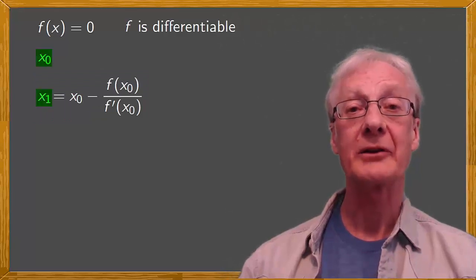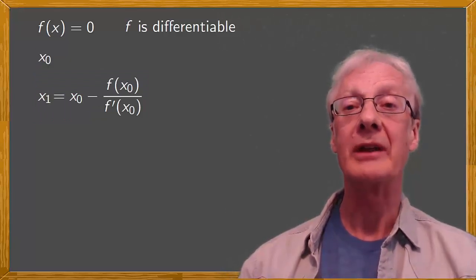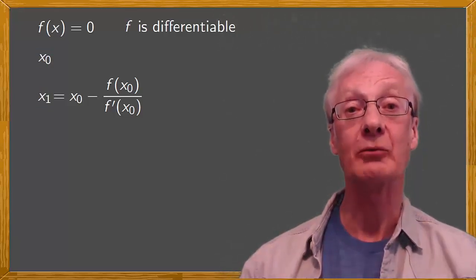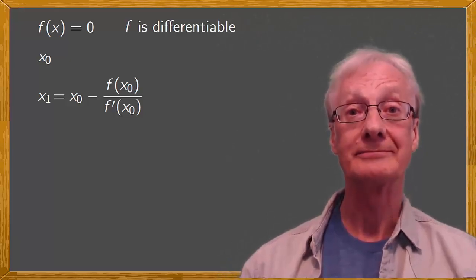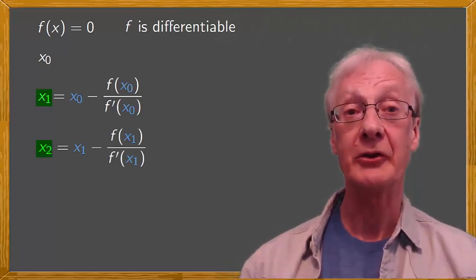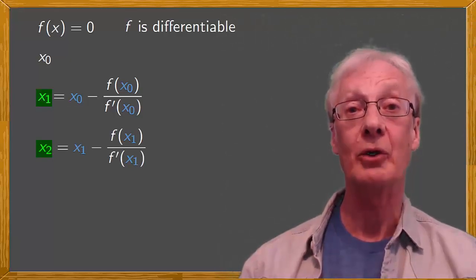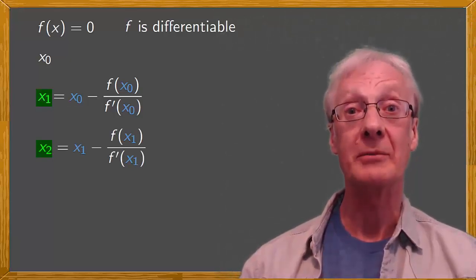Having obtained x1 from the starting value x0, we can then obtain x2 from x1 in the same way, by replacing x1 with x2 and x0 with x1. This gives us x2 equals x1 minus f of x1 over f prime of x1.